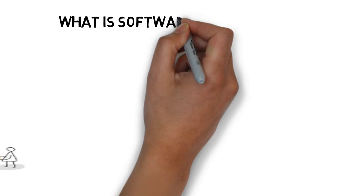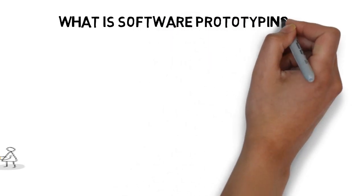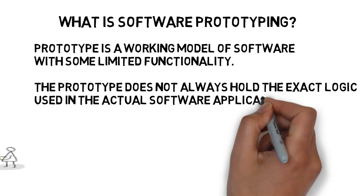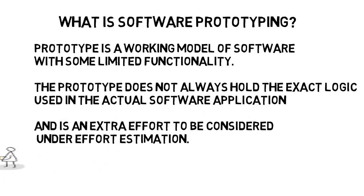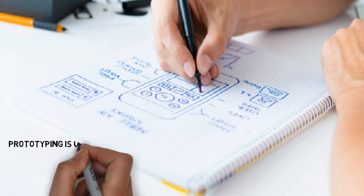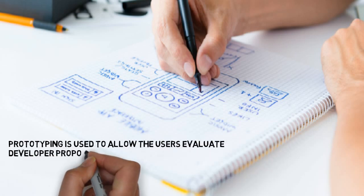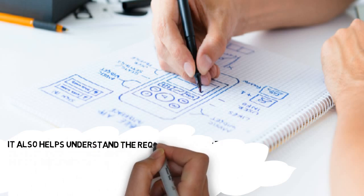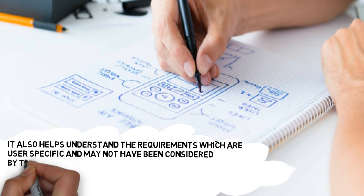So what is software prototyping? A prototype is a working model of software with some limited functionality. The prototype does not always hold the exact logic used in the actual software application and is an extra effort to be considered under effort estimation. Prototyping is used to allow users to evaluate developer proposals and try them out before implementation. It also helps understand requirements which are user-specific and may not have been considered by the developer during product design.